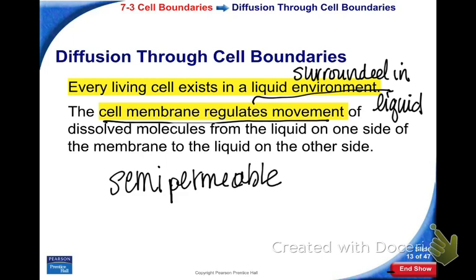And we call that a semi-permeable membrane. If something is permeable, it means it can pass through. If it's semi-permeable, then certain things can pass through and other things cannot. Semi means kind of half — partly permeable. So the cell membrane helps to control what enters and leaves the cell.